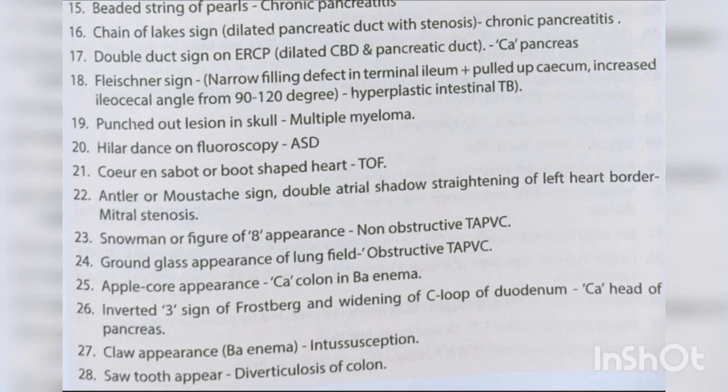Fleischner sign — narrow filling defect in terminal ileum plus pulled-up cecum, increased ileocecal angle from 90 to 120 degrees — hyperplastic intestinal TB. Punched-out lesion in skull — multiple myeloma. Hydatid dance on fluoroscopy. Coeur en sabot or boot-shaped heart — tetralogy of Fallot.